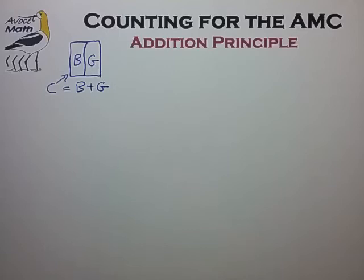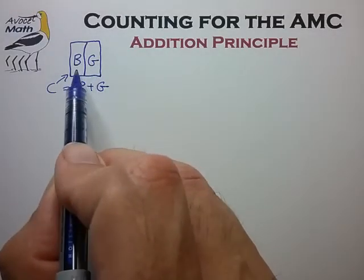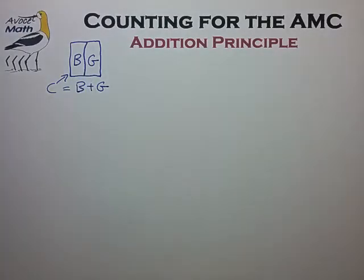This is one of the simpler examples where the two subsets are fairly obvious and non-overlapping. Generally speaking, non-overlapping subsets are preferred when trying to divide a set into smaller pieces for the purpose of making the counting task simpler.